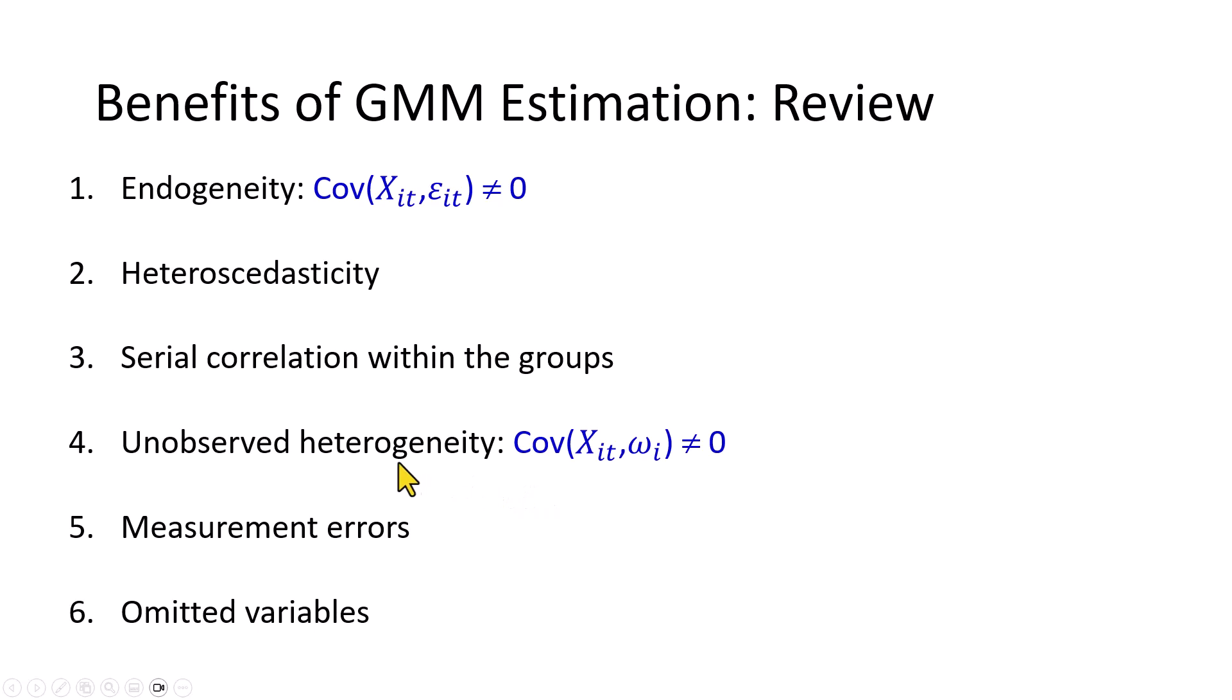So to review, what are the benefits of GMM estimation? It controls for endogeneity, heteroskedasticity, serial correlation, unobserved heterogeneity, which is the unobserved group effects, measurement errors, and omitted variable bias.